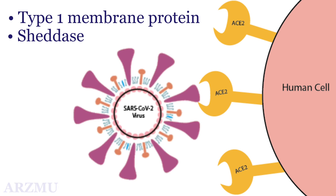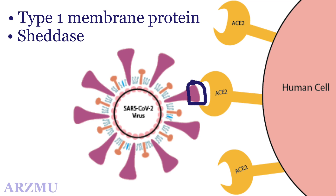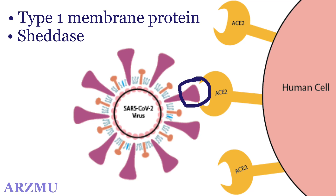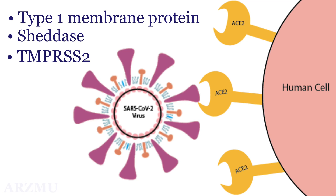The binding of the spike S1 protein of SARS coronavirus and SARS coronavirus 2 to the enzymatic domain of ACE2 on the surface of cells results in endocytosis and translocation of both the virus and the enzyme into endosomes located within cells. This entry process also requires priming of the S protein by the host serine protease TMPRSS2.